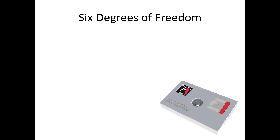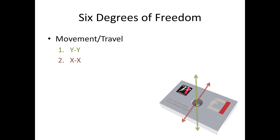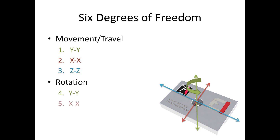So what are the six degrees of freedom? The first three we'll talk about are movement or travel. We have the Y direction — up and down in this case — and then we have X, and then we have Z. Then we have the rotations: rotation of Y, and X, and again Z.